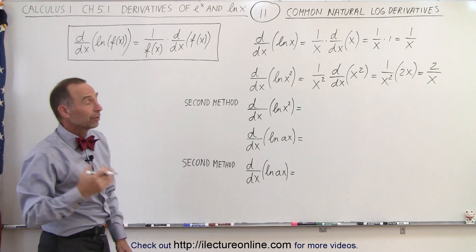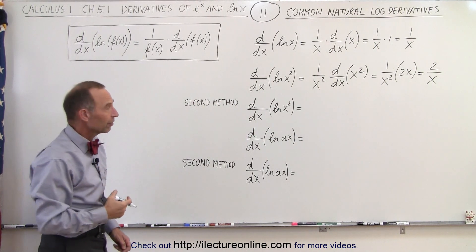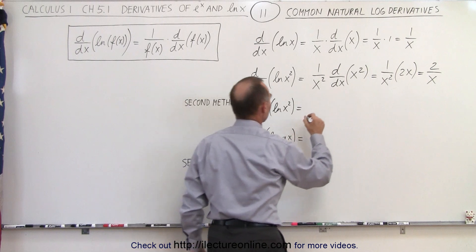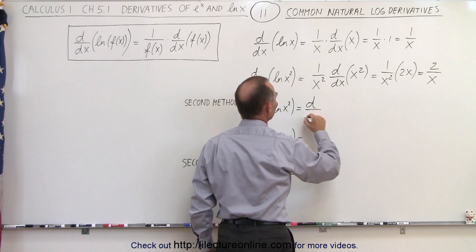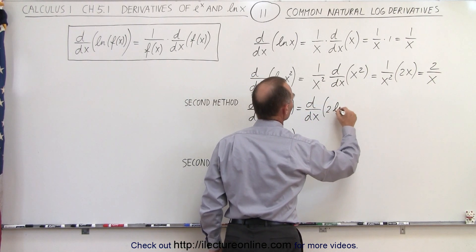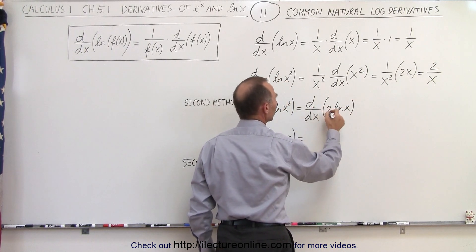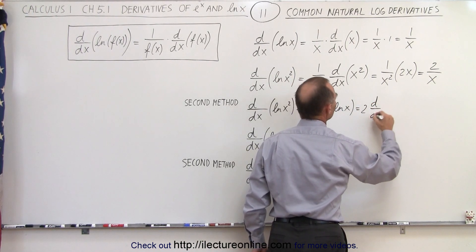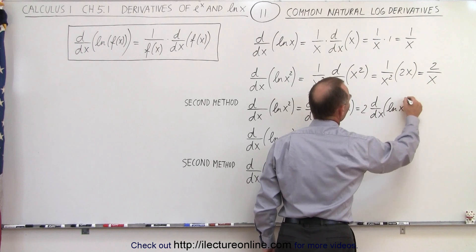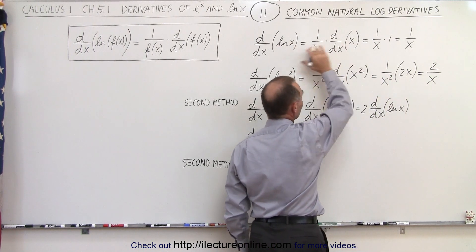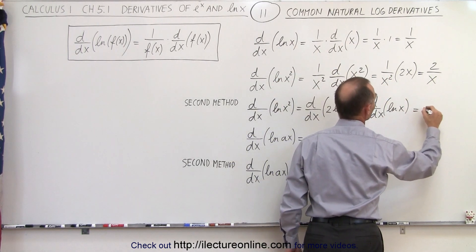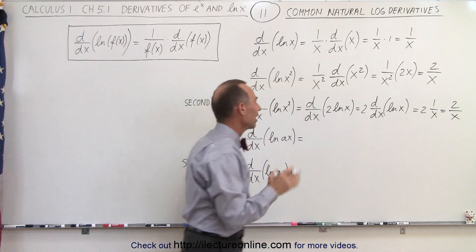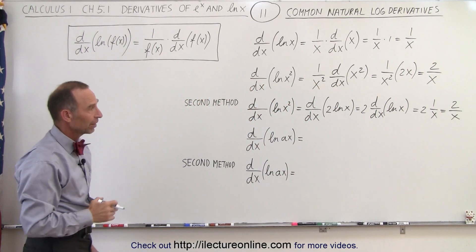There's another way we could have done that by employing some rules of logarithms. We know that the natural log of x squared can be written as 2 times the natural log of x. So this would be the d/dx of 2 times the natural log of x. Since 2 is a constant, it can be taken outside, giving us 2 times the d/dx of the natural log of x, which becomes 2 times 1 over x, equal to 2 divided by x — the same result, but with a different methodology.